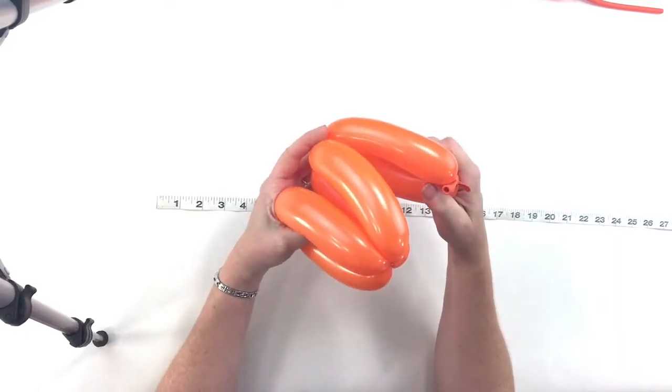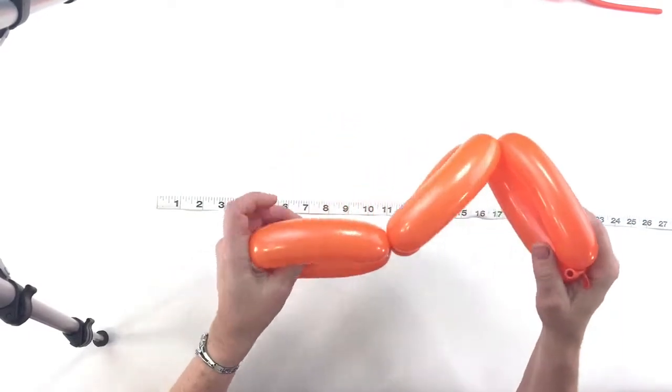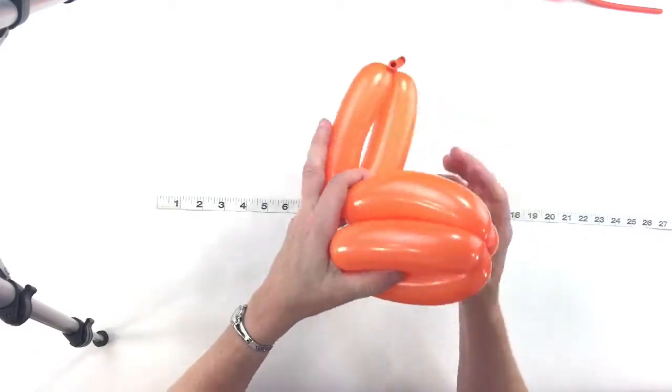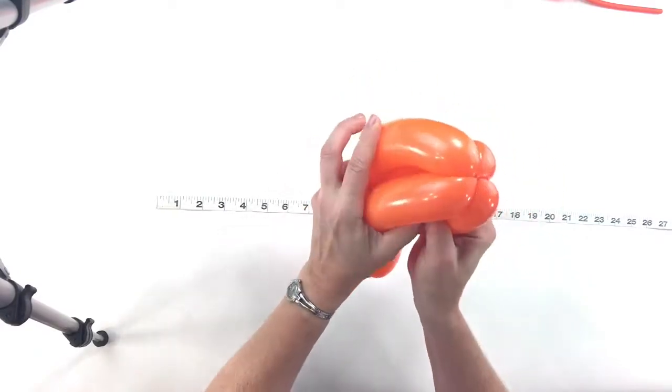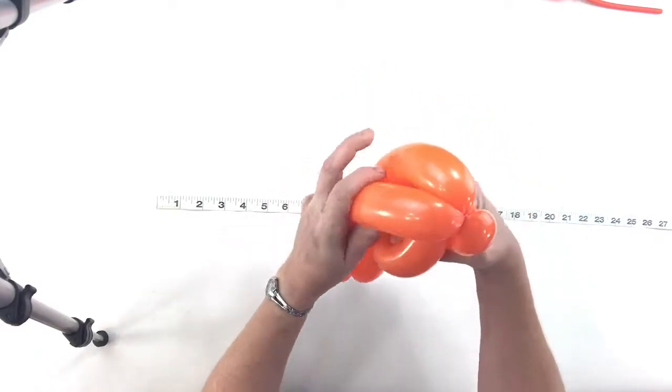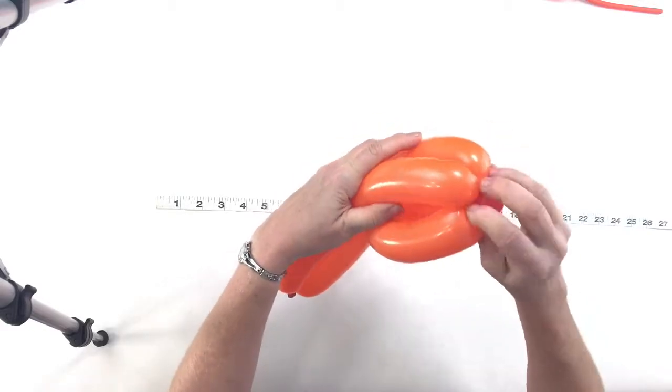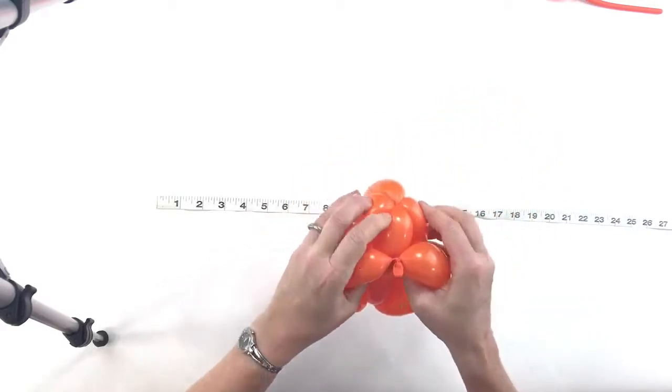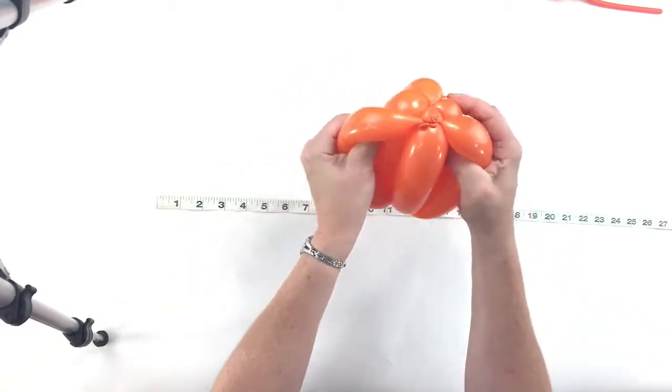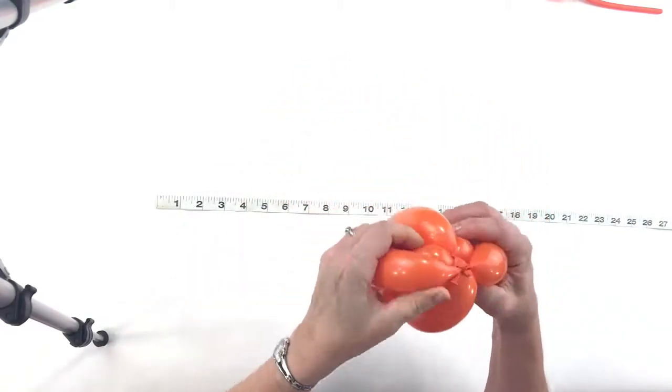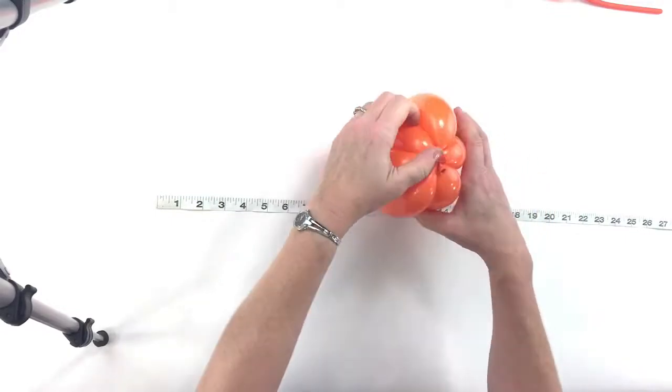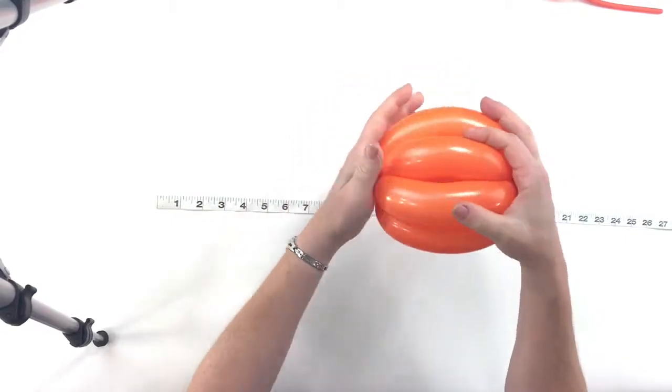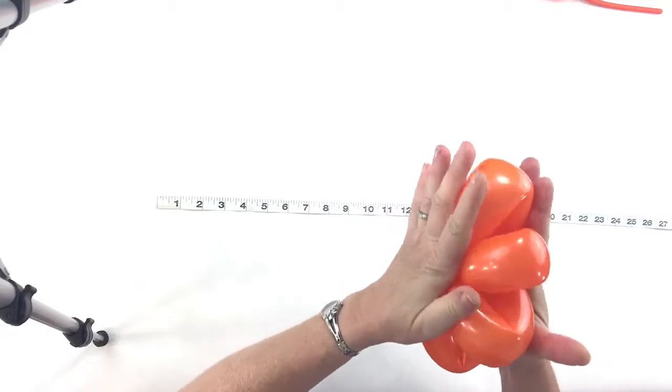But we're not going to twist it into a flower. We're going to flip this over, flip one section through, do this, and then take this up and pull it over like that. And then just kind of tuck it in. And then you want to flatten it out like that.